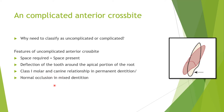The third feature is a Class I molar and canine relationship in permanent dentition, or normal occlusion in mixed dentition. This confirms the problem is isolated, which is easy to solve. A Class III molar and canine relationship would be very difficult to manage at a general dental practitioner level, would cause frustration for both the practitioner and patient, and would be a waste of time. Learn to identify uncomplicated anterior crossbite features and then manage it with confidence.